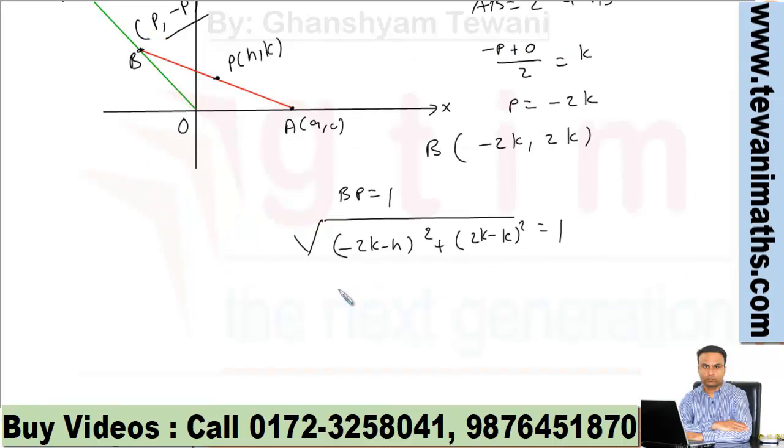Simplifying, we have 4k² + k², that is 5k² + h² + 4hk = 1.